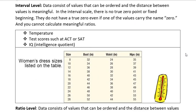The interval level is the next set of data and it consists of values that can be ordered and the distance between values is meaningful. There's no true zero point or fixed beginning. They do not have a true zero even if one of the values carries the name zero, and you cannot calculate meaningful ratios.